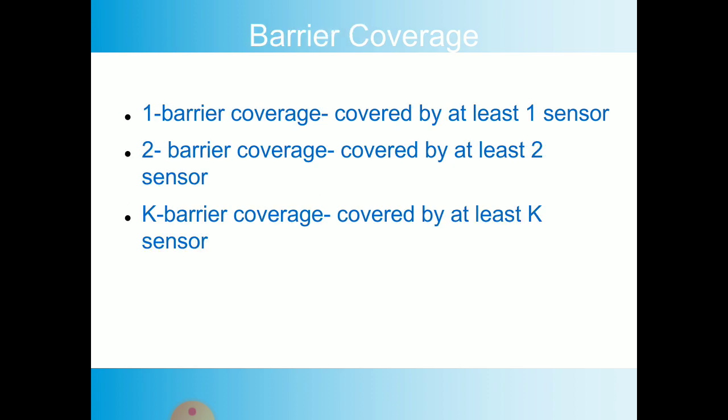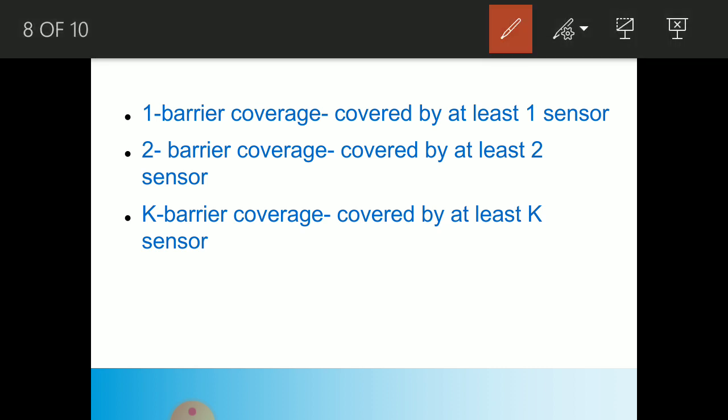Now another is a type of coverage we have to coverage barrier coverage. There are three types mainly three types of coverage: one barrier coverage covered by at least one sensor, two barrier coverage covered by at least two sensors, and K barrier coverage covered by at least K sensor to be covered. In this video now we talk about the one by one what is the one barrier coverage at two ranges and K barrier coverage.